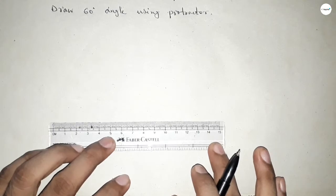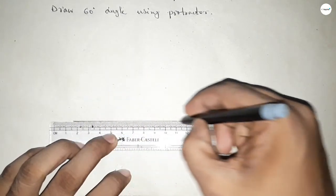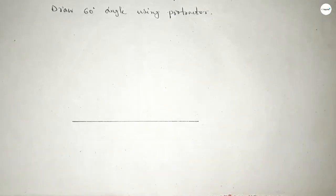First of all, we have to draw a line of any length here. So first drawing a line here. Okay, now using protractor to draw 60 degree angle.